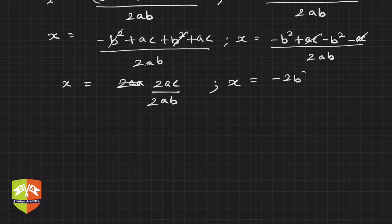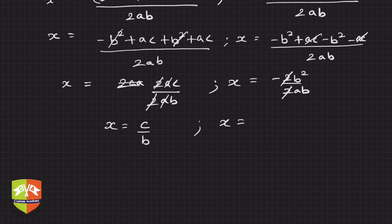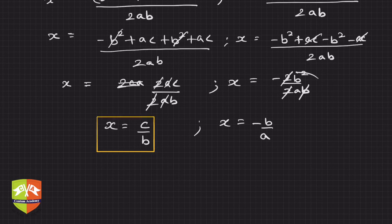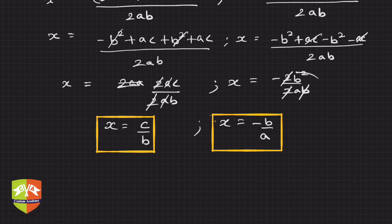Simplifying further — the 2 cancels, and if a is not equal to zero, the a cancels too, giving x equals c by b. For the other solution, the 2 cancels and if b is not equal to zero, the b cancels, giving x equals minus b by a. So the two solutions are x equals c/b and x equals minus b/a.